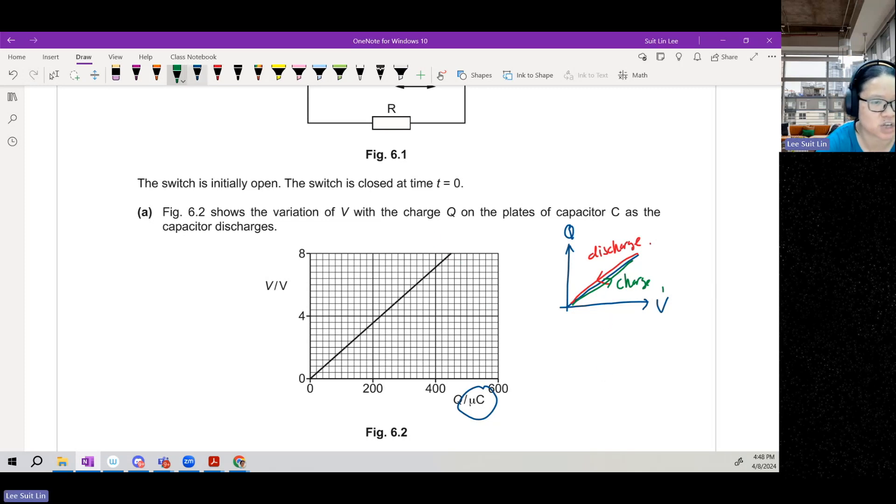If first I started with this much charge, I started with 450 microcoulombs. So if I draw Q against t, I start with 450 microcoulombs. I don't know what's the time now, but it will go down.